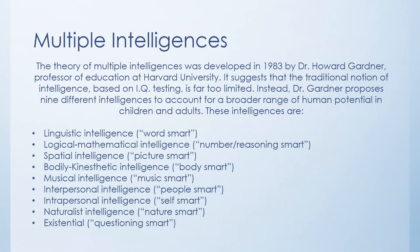There's another facet of learning we should address: the idea of multiple intelligences. Typically, when we're talking about intelligence, especially in the U.S. or the Western world, we tend to be biased towards people who have linguistic intelligence and are logical and mathematical. Those two types of intelligences tend to be most prestigious. But in 1983, Dr. Howard Gardner really thought about this idea of intelligence and suggests that traditional notions of intelligence based on IQ testing are far too limited.